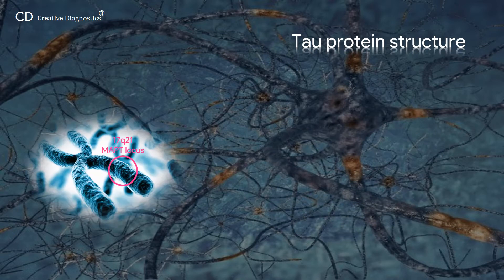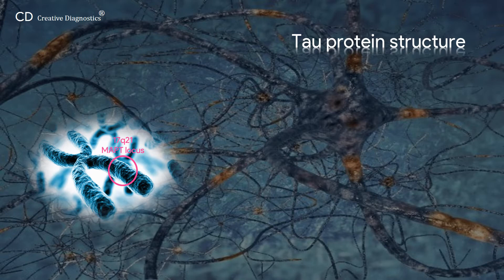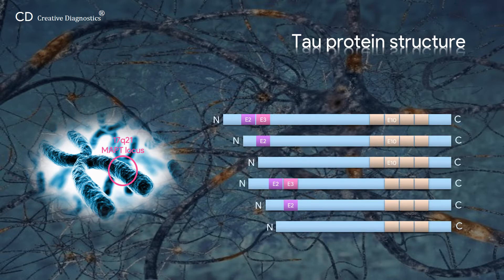Tau protein is produced by alternative mRNA splicing of a single gene MAPT. Human MAPT is located at the chromosomal locus 17q21 and contains 16 exons. And alternative splicing of exons 2, 3, and 10 yields 6 isoforms.